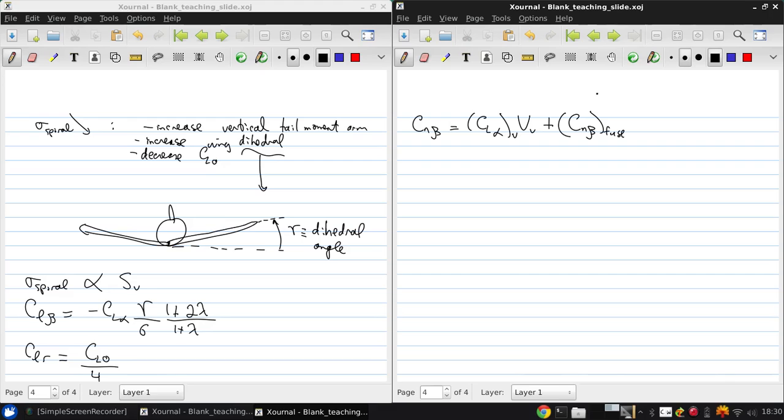Just as a reminder, just like for the horizontal tail, the vertical tail volume coefficient is the area of the vertical tail times the distance from the wing aerodynamic center to the vertical tail over the wing area and chord.